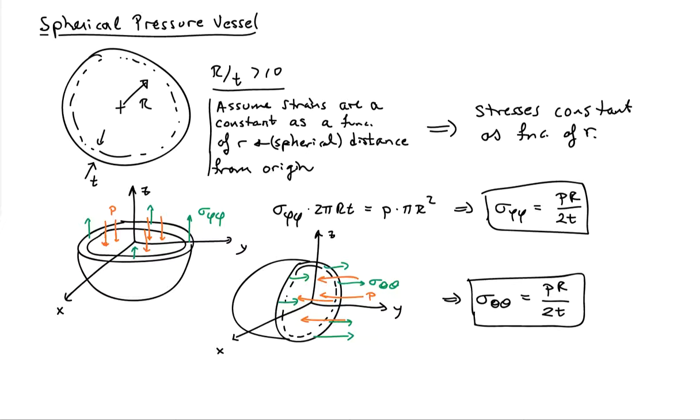If I make a vertical section cut through the sphere, I'll expose sigma_theta theta, so the hoop stress. And I find out that sigma_theta theta is also equal to pR over 2t. So we get the exact same result.